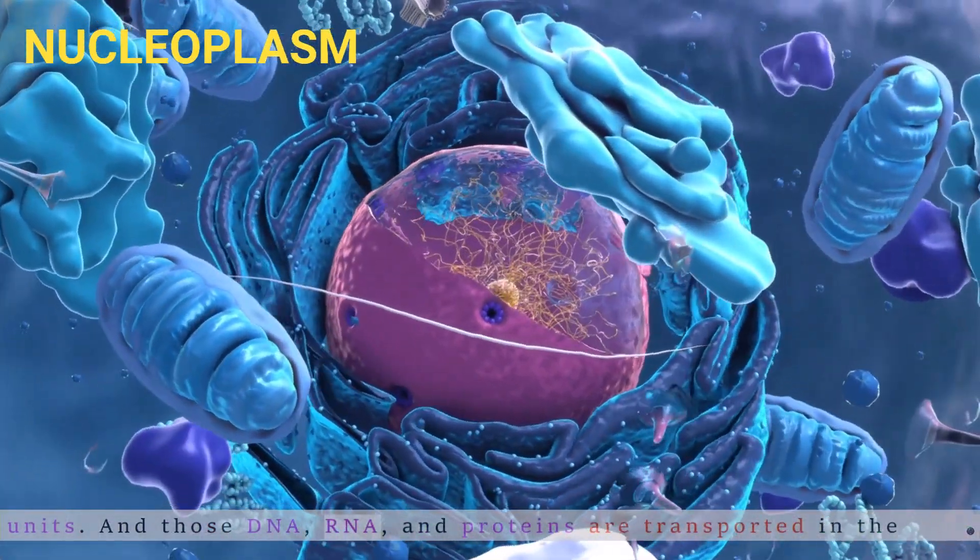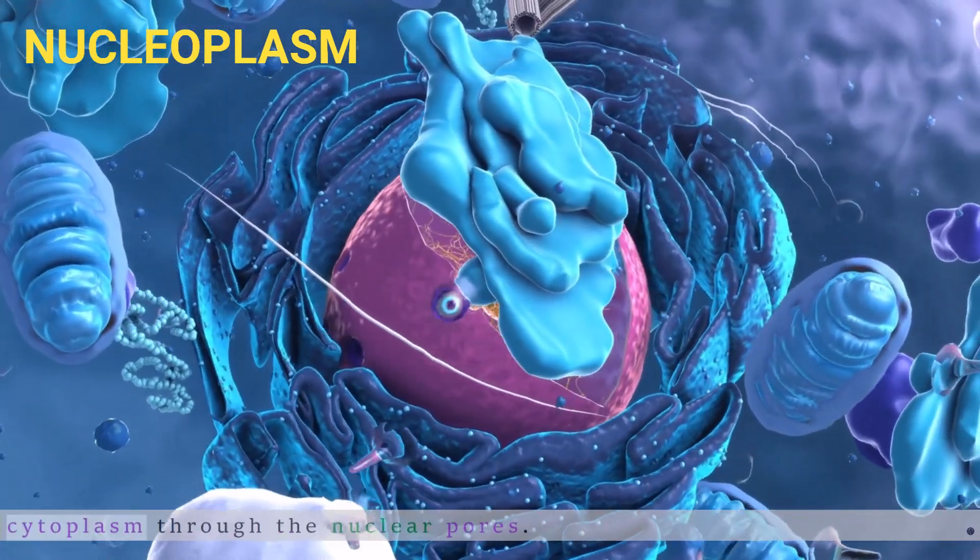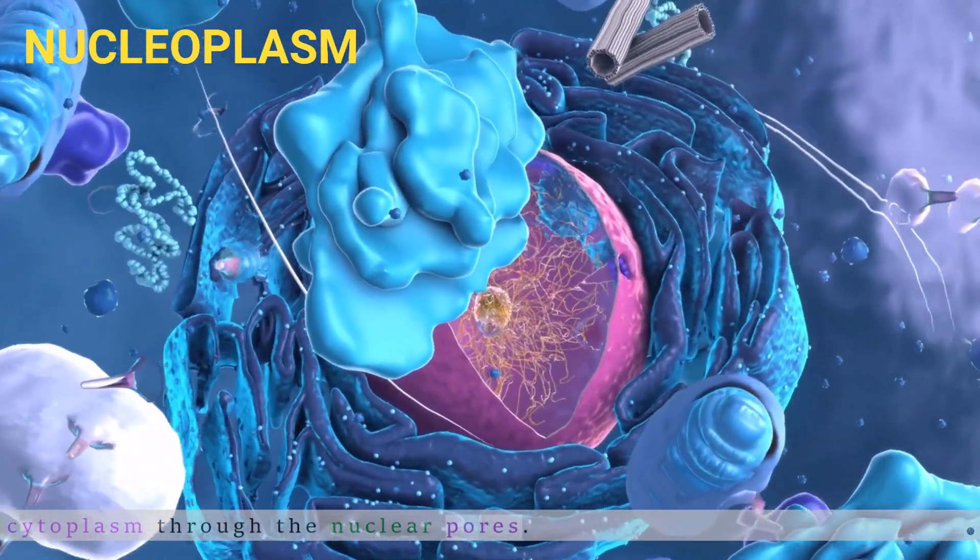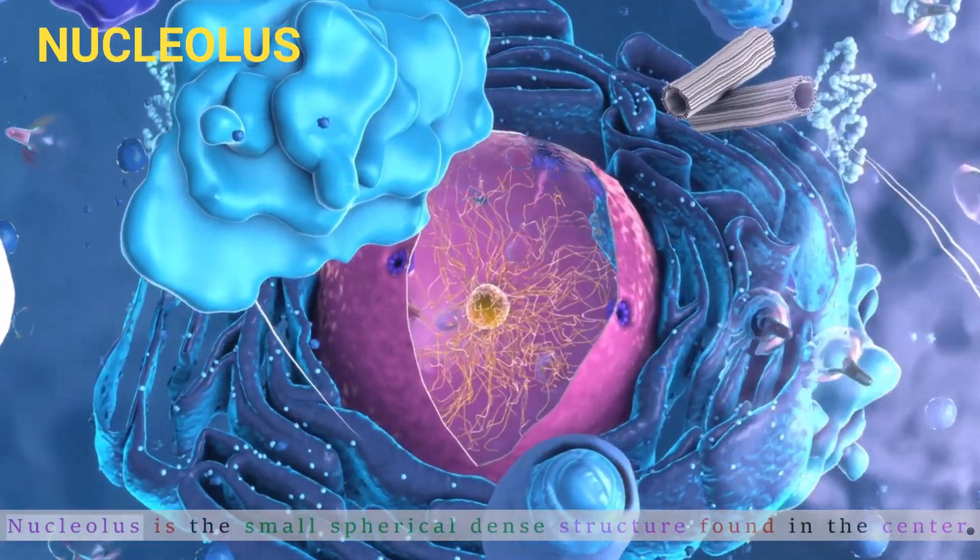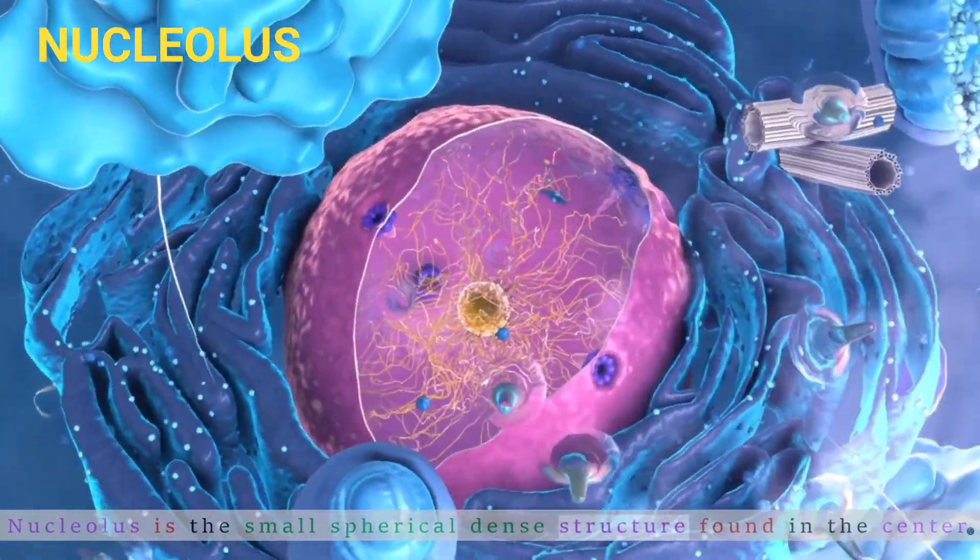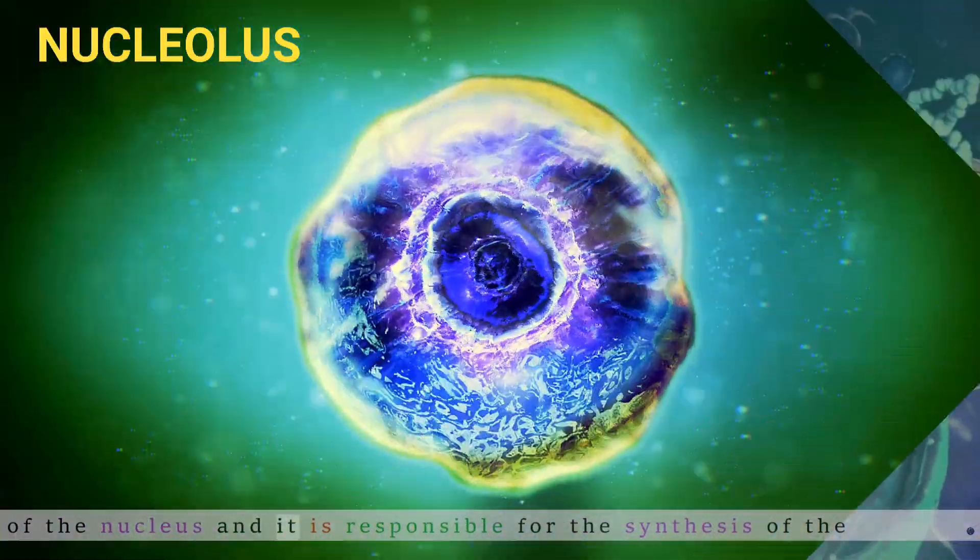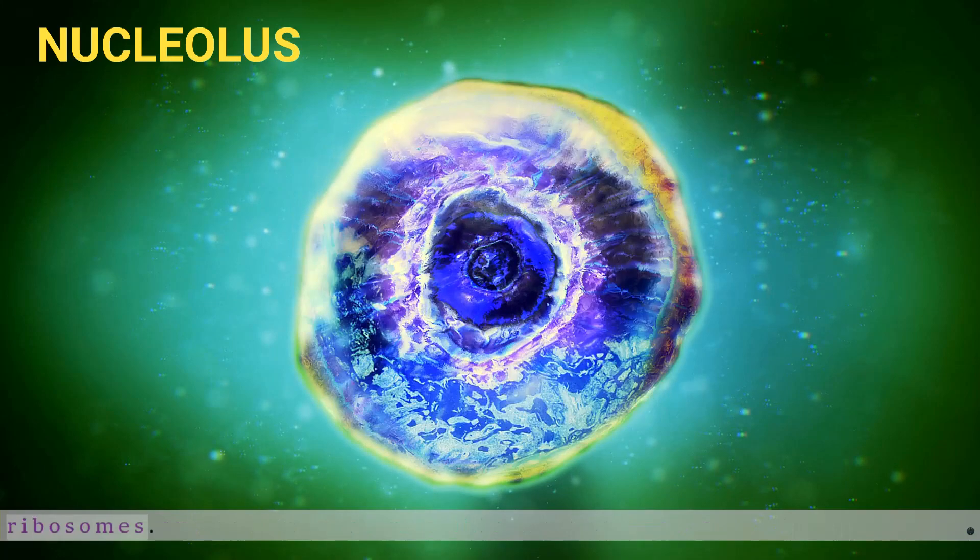DNA, RNA, and proteins are transported to the cytoplasm through the nuclear pores. The nucleolus is a small, spherical, dense structure found in the center of the nucleus and is responsible for the synthesis of ribosomes.